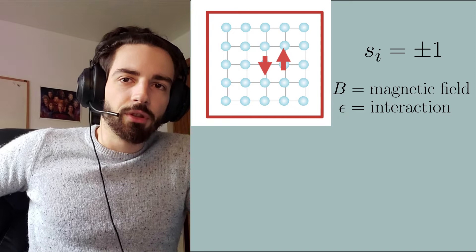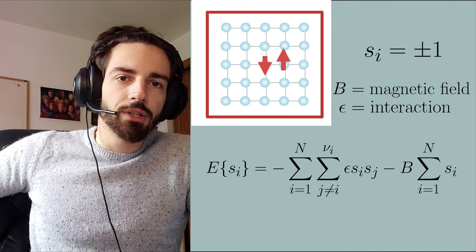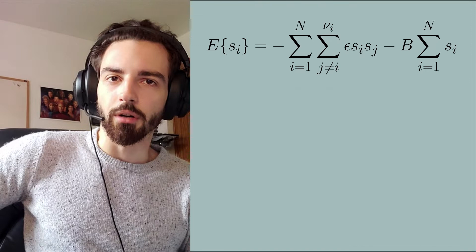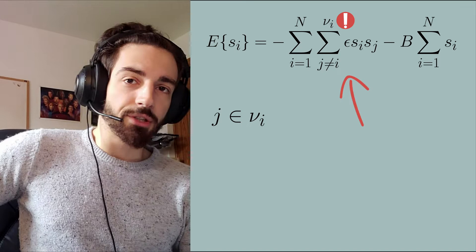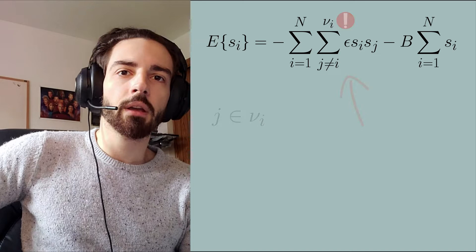The energy of the system in the particular configuration is given by the following equation, and this is the sum of the interaction energies and the magnetization. The first term accounts for the interaction energies between each site i and all of its neighbors j, and ν_i is the set which describes nearest neighbors, next nearest neighbors, up to some finite range of interaction neighbors.